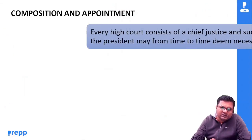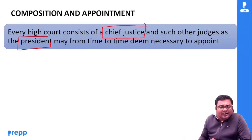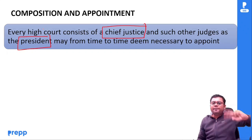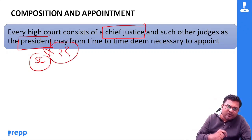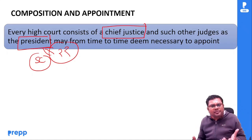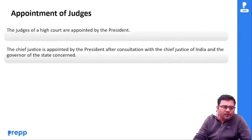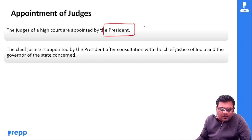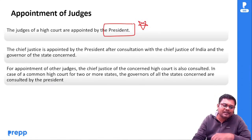Composition देख लेते हैं — every High Court consists of Chief Justice and such other judges as President may from time to time deem necessary to appoint। Compare करो Supreme Court से — यहाँ पे President decide कर रहे हैं in case of High Court। Appointment of judges — not Governor, appointed by President। ये चीज़ ध्यान रखना, ये मत सोचना कि state है तो Governor आ जाएंगे — नहीं, President appoint करते हैं judges of High Court को।